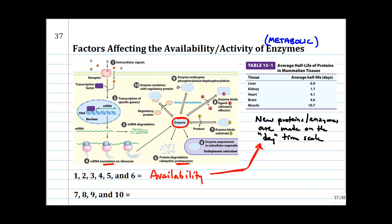We can regulate the availability of a metabolic enzyme, but we'll spend most of our time on regulating the activity of a metabolic enzyme. Two of the more common mechanisms are allosteric regulation and hormonal regulation. Allosteric regulation can either turn on or turn off very specific metabolic enzymes. Hormonal regulation, through a complicated series of events, can speed up or slow down specific metabolic enzymes.